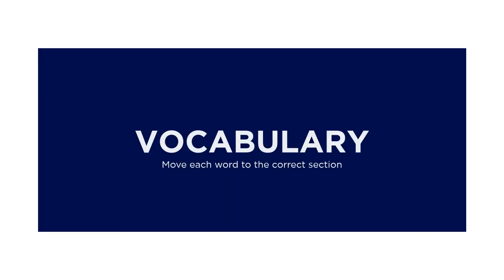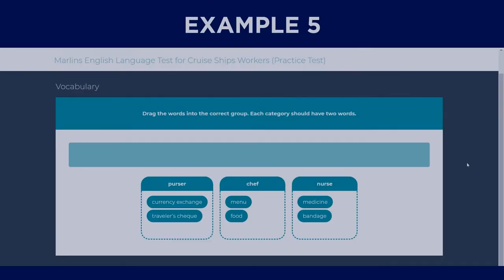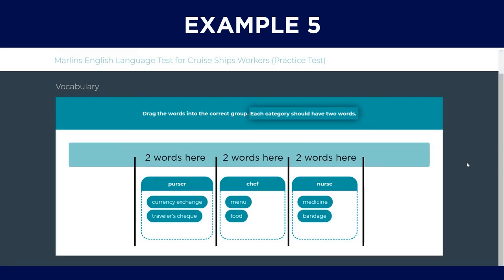Secondly, on vocabulary questions, a reminder that for the vocabulary category, move each word to the correct section. Each section should only have two words in it. A tip would be to match the words that you know first, then the rest would be for the column that you are not sure of.